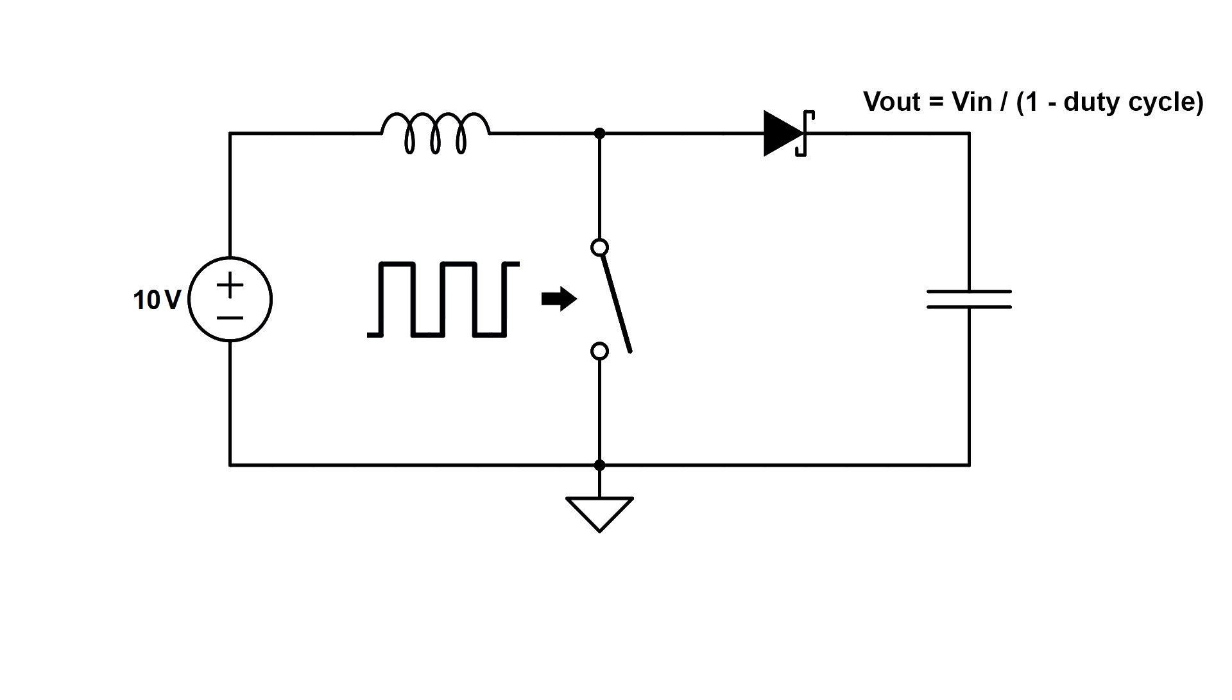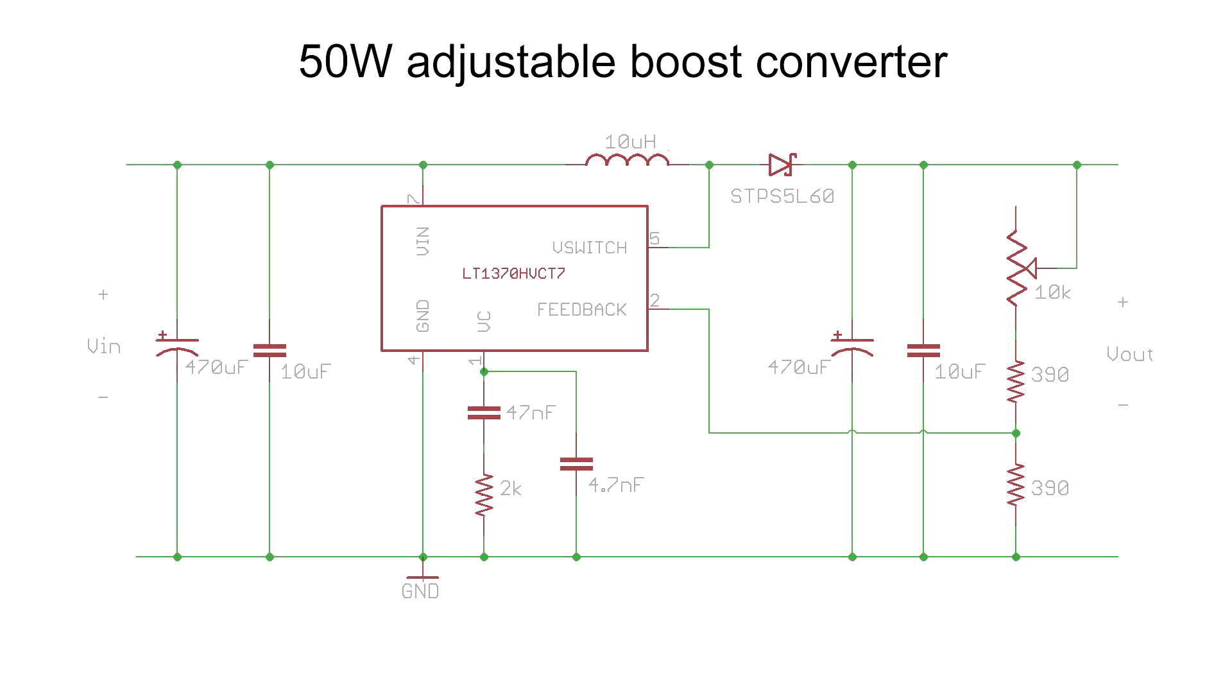So just like with our buck converter, if we want to build a real life boost converter, we need a controller chip that will adjust the pulse width to make sure we have a constantly regulated output voltage. Let's use the LT1370HV from Linear Technology and as usual I'll put links in the video description section. The input and output of the supply have a combination of electrolytic and ceramic capacitance to help deal with the high frequency currents. You're going to see this in nearly every switch mode power supply. We're going to use a Schottky diode with as low a forward voltage as possible to keep things efficient. And here we've got our feedback resistor network that I calculated to give you guys a maximum output of around 30 volts.